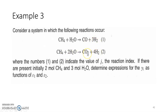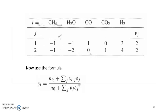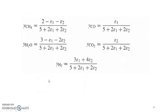For hydrogen, it is 3 epsilon 1 plus 4 epsilon 2. And for CO2, it is epsilon 2. These are all the final number of moles at equilibrium. Make the summation of that — that will give you the final total number of moles. Divide individual number of moles by total moles and that gives you the mole fraction. This can be converted into a tabular form, and this is the overall stoichiometric coefficient.